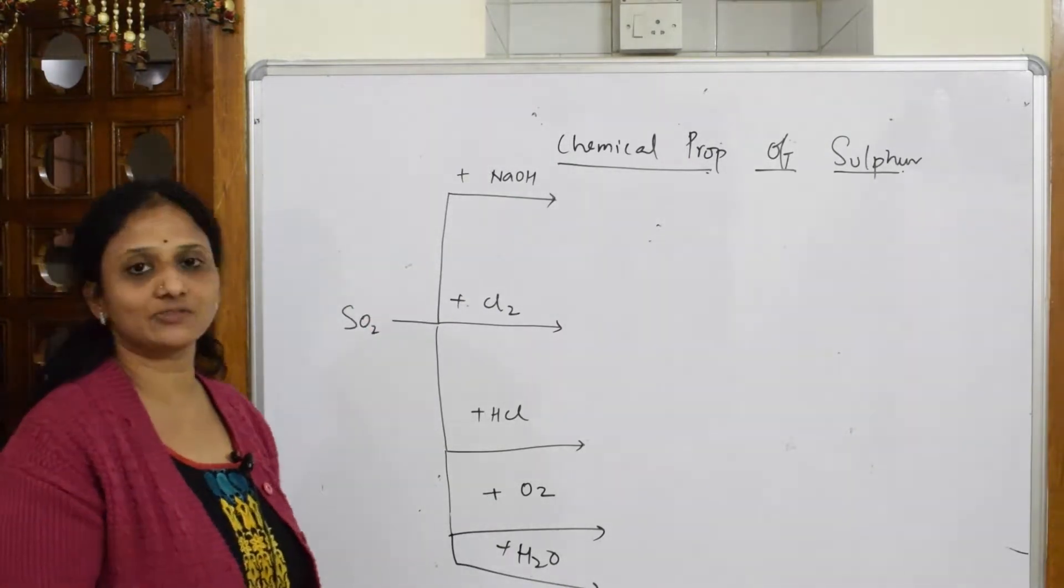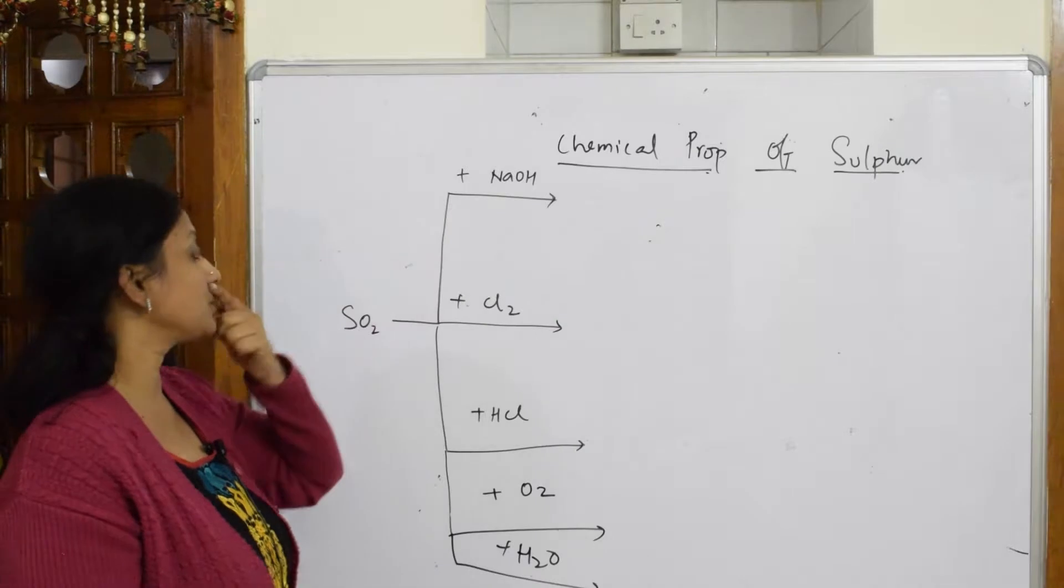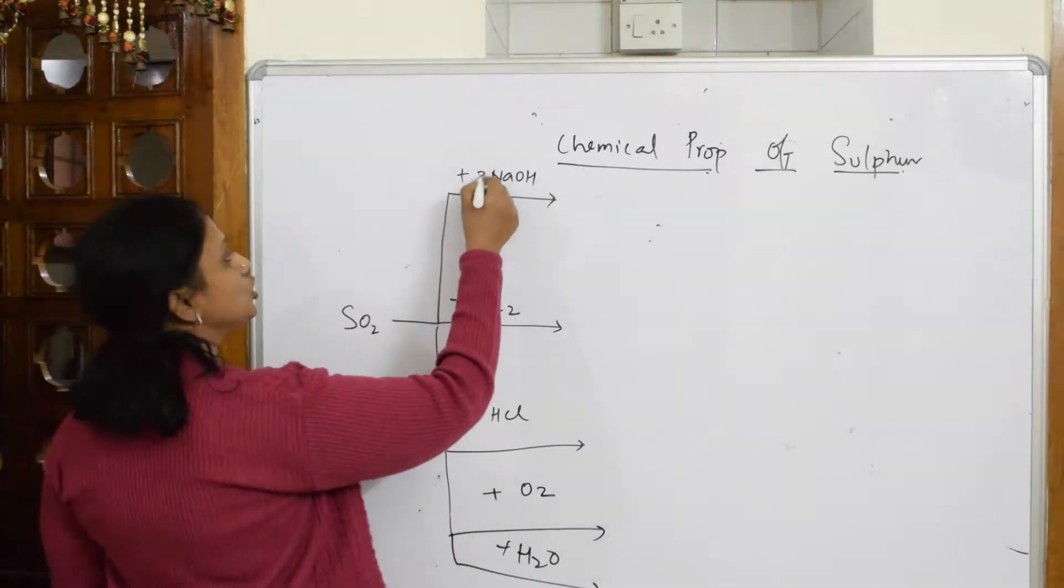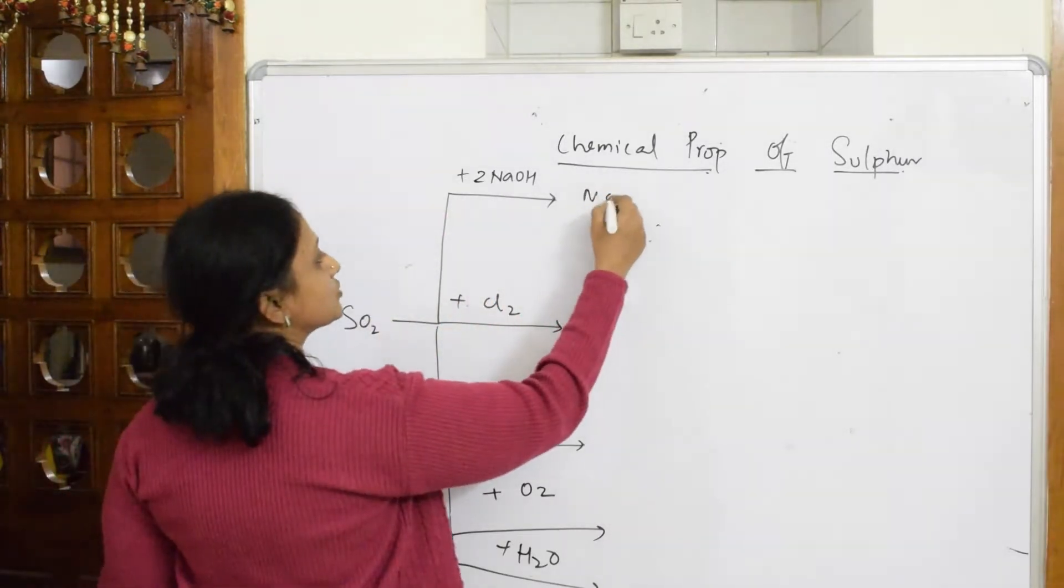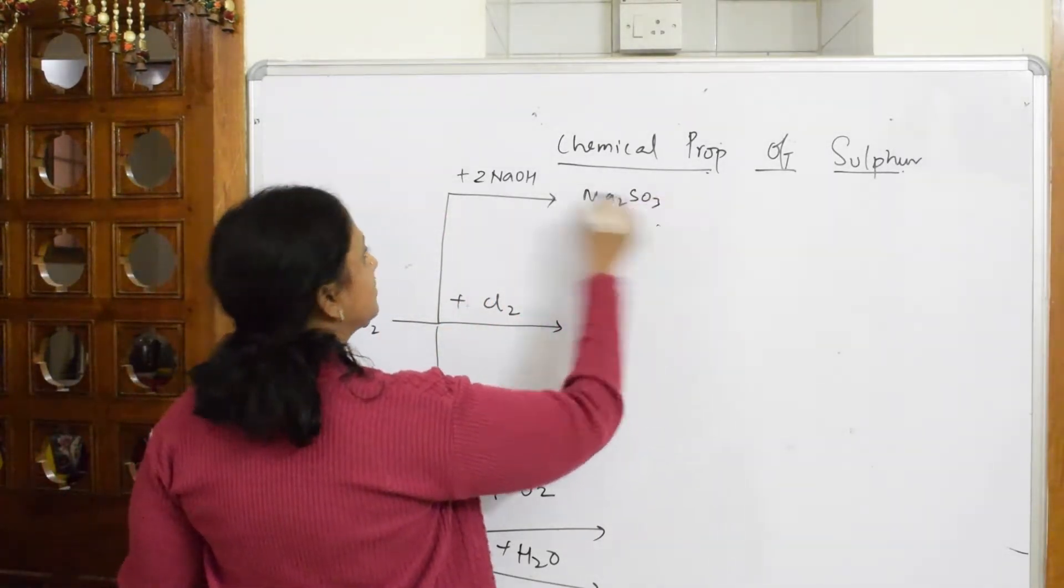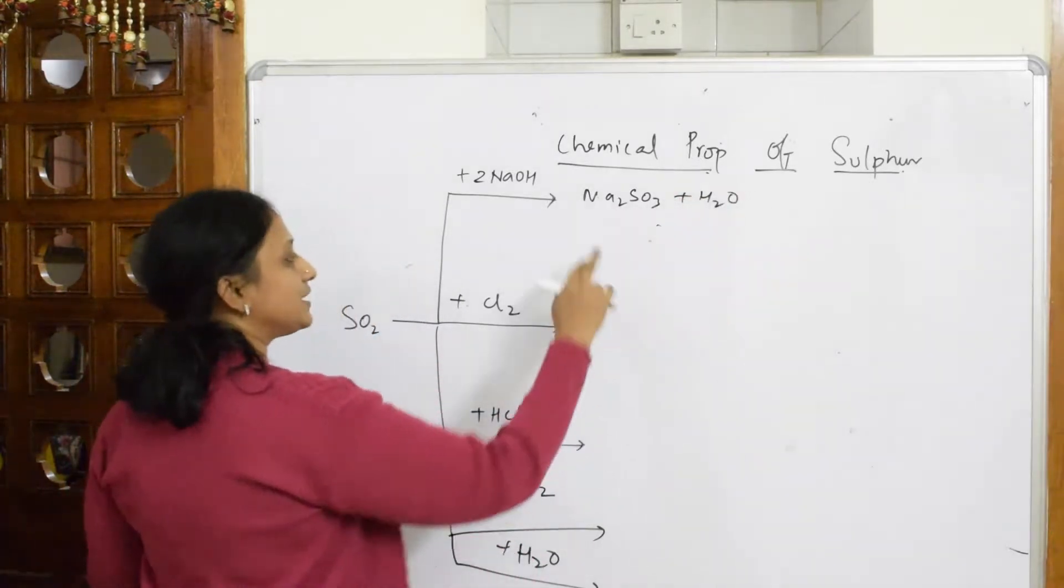First important thing: suppose in the exam they give a reaction of sulfur dioxide with sodium hydroxide. That's simple, isn't it? Now suppose if I take two moles of this, it's going to form Na2SO3, sodium sulfite, plus the leftover is water.